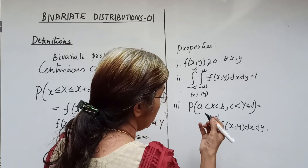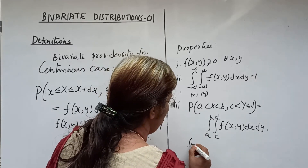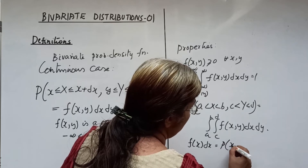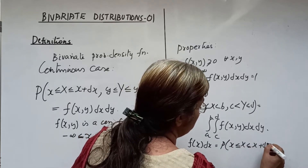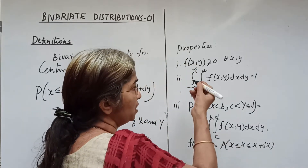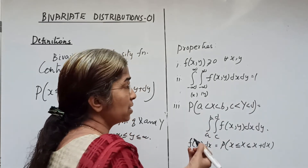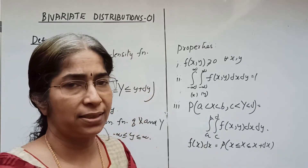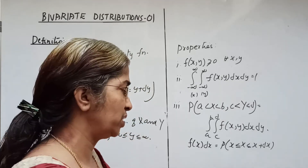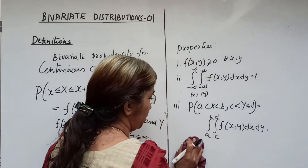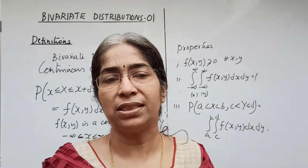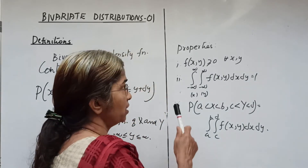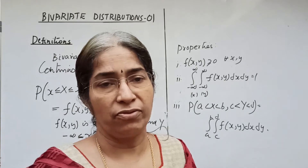In the univariate case, f of x dx is the probability that the random variable x is defined over the interval x to x plus dx, and satisfies: f of x ≥ 0 for all x, the integral from minus infinity to infinity of f of x dx equals 1, and the probability that a < x < b equals the integral from a to b of f of x dx. When we have only one variable, it is the univariate case; when we have two random variables, it is the bivariate case.